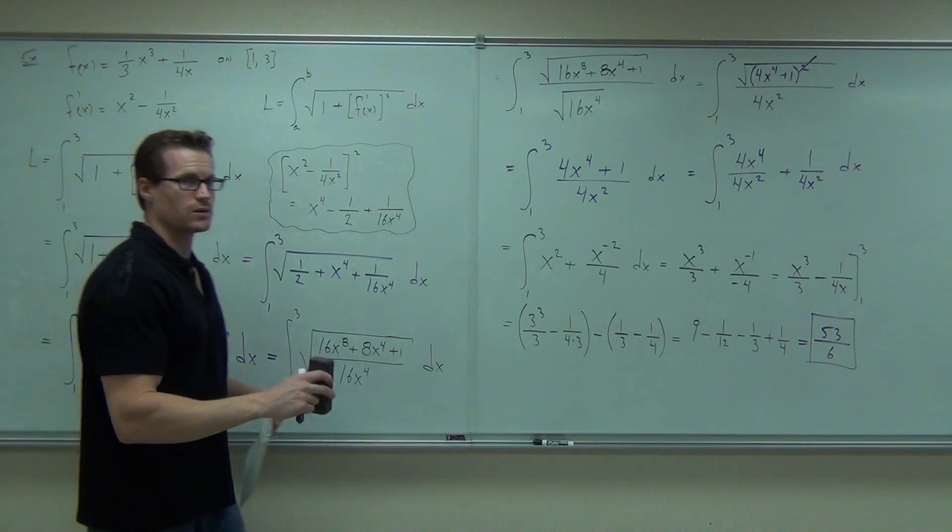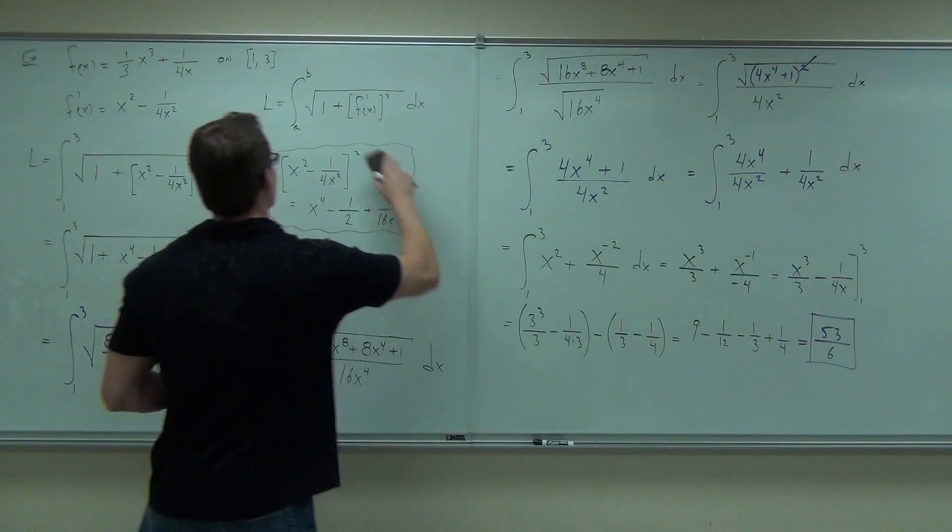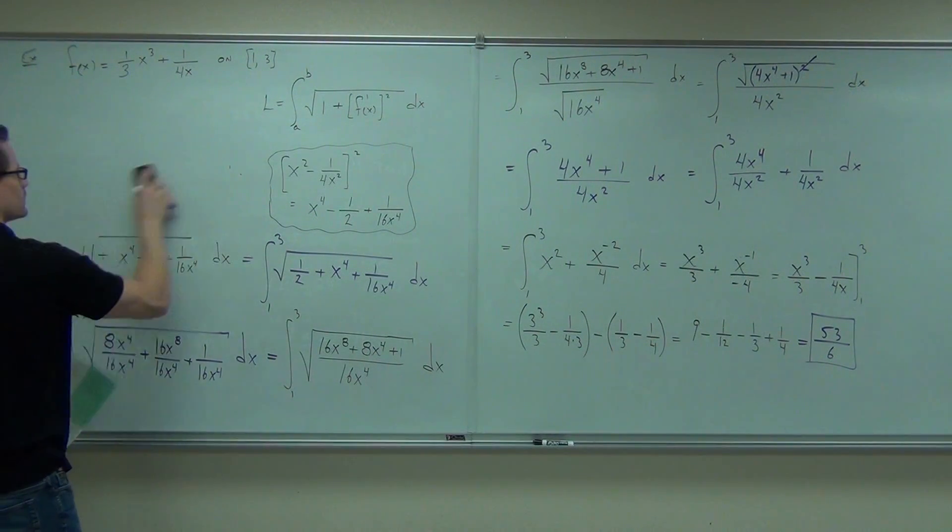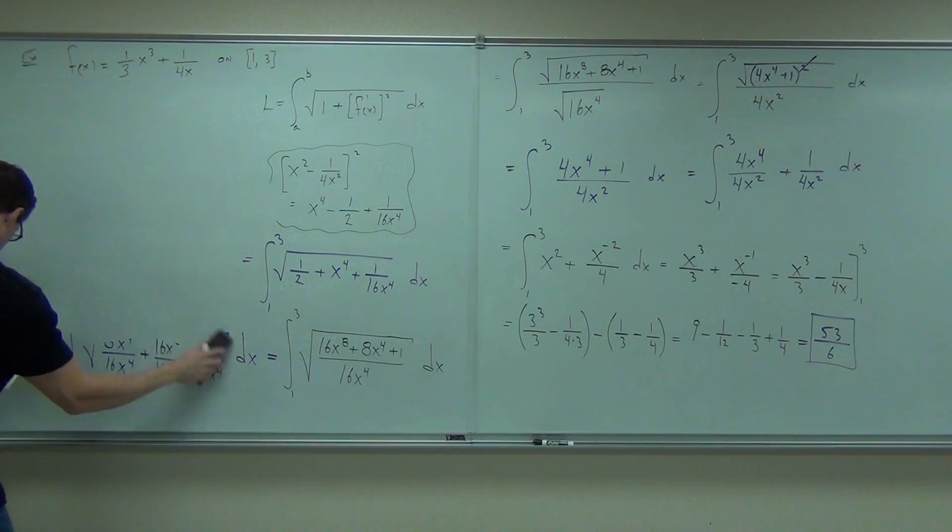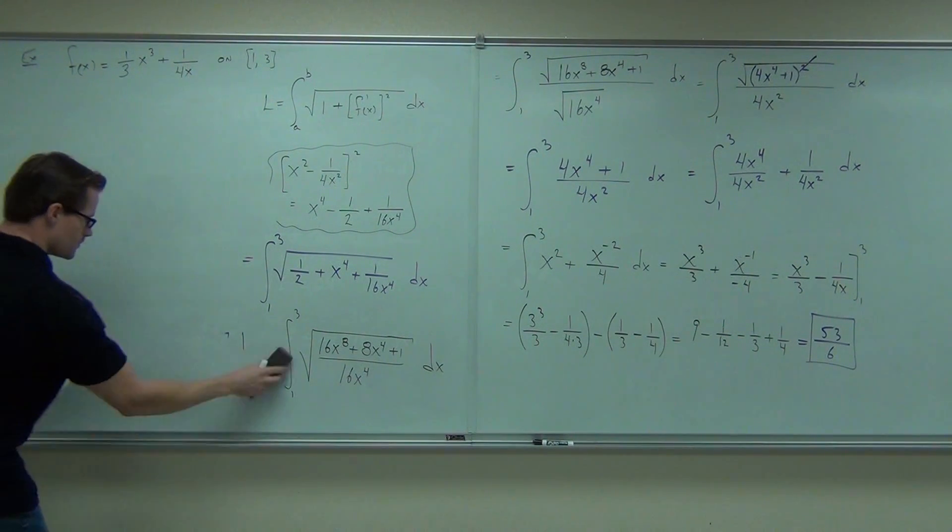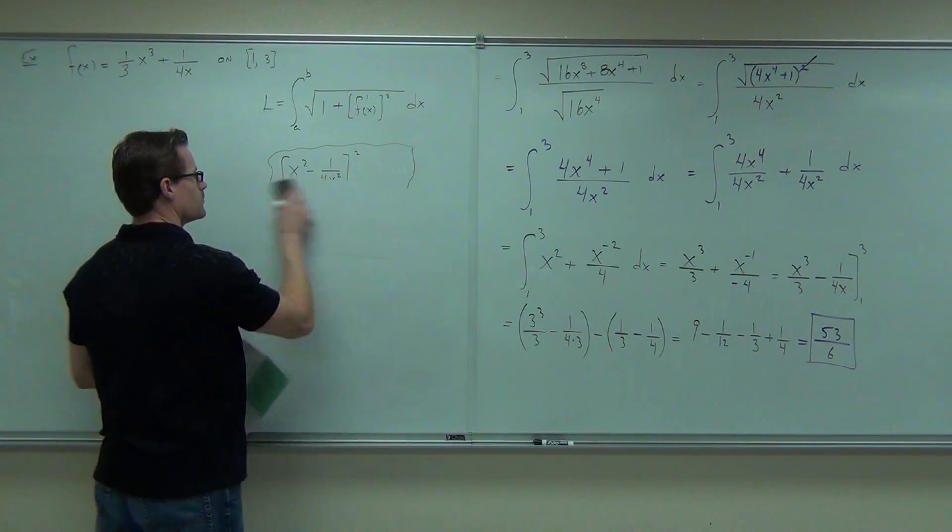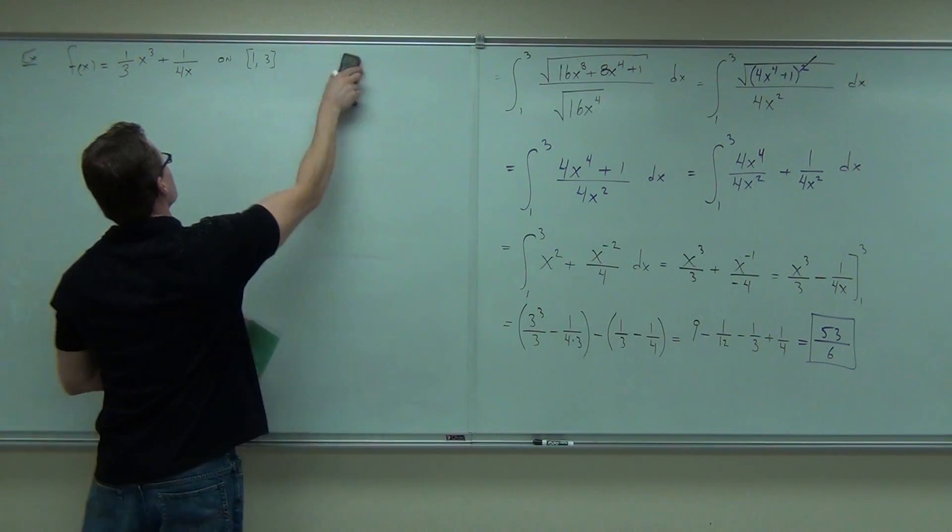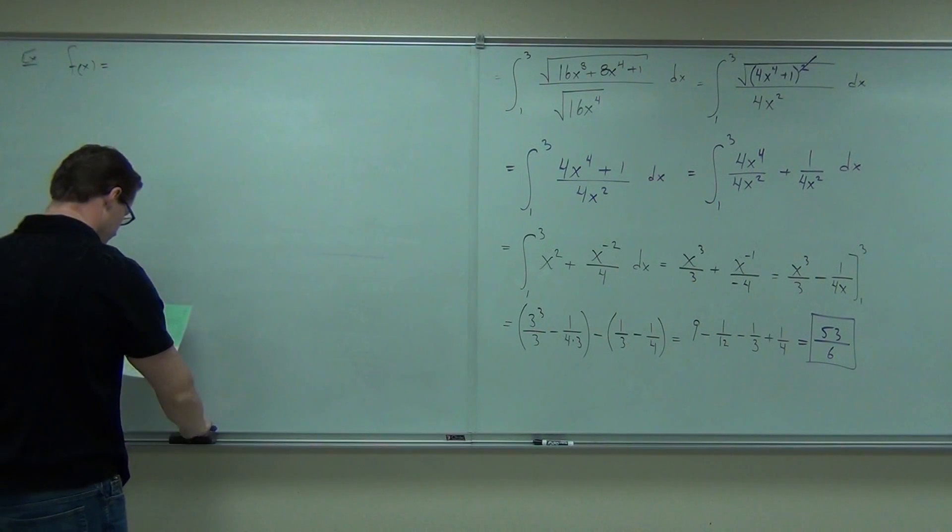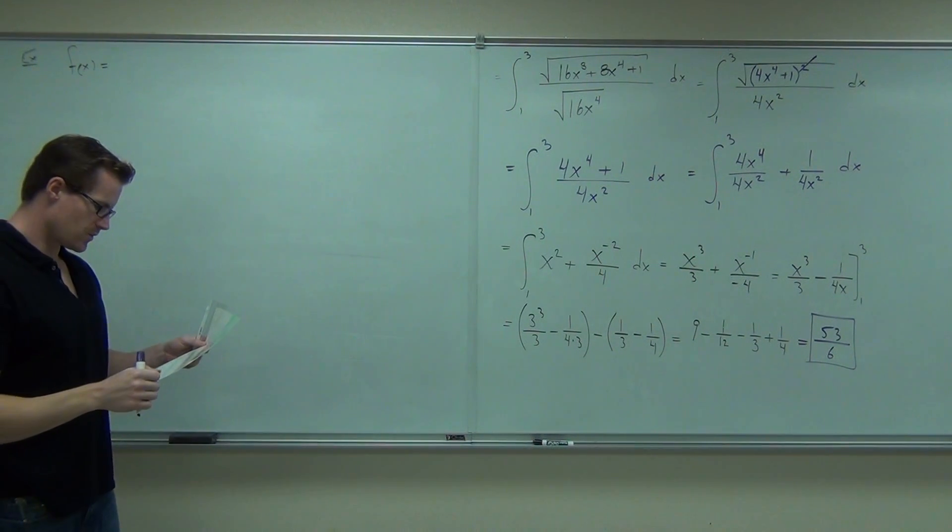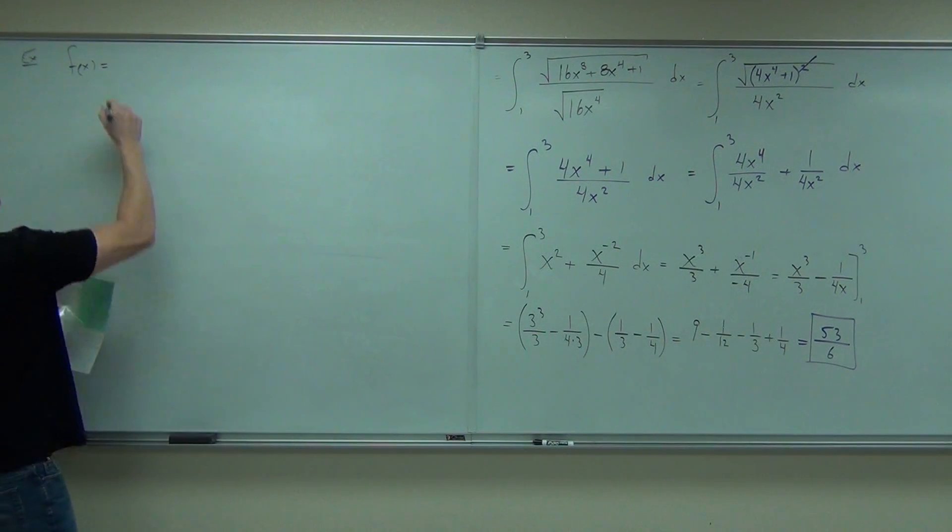Any questions before I erase it all? All right. Okay, so let's do this one. So, f of x is now x to the three halves.